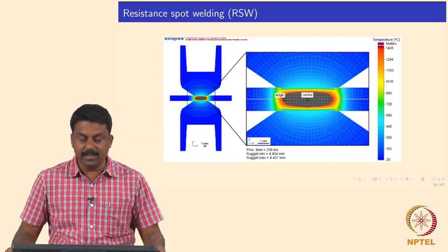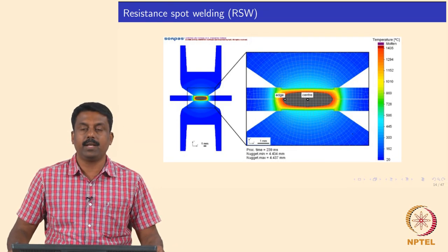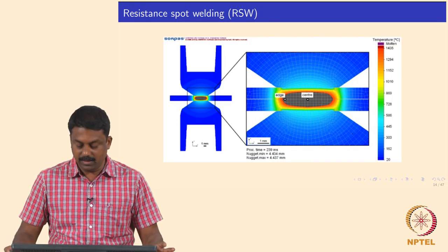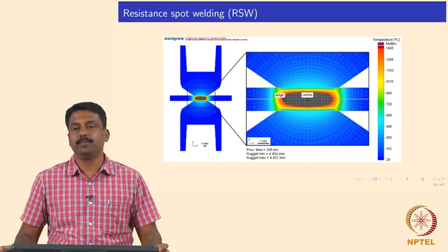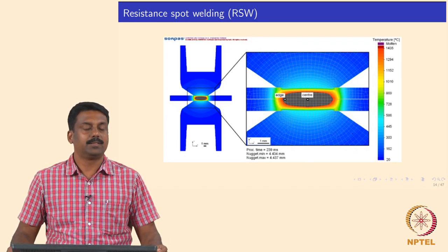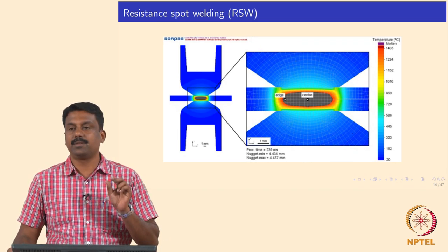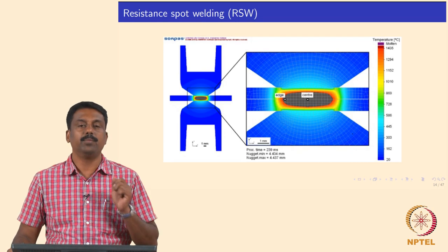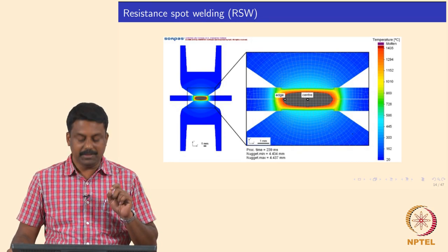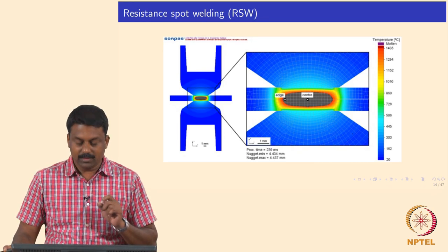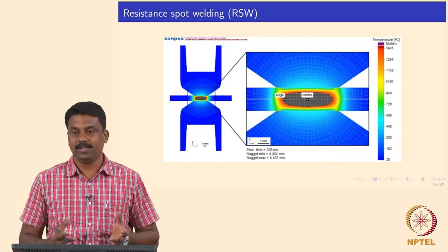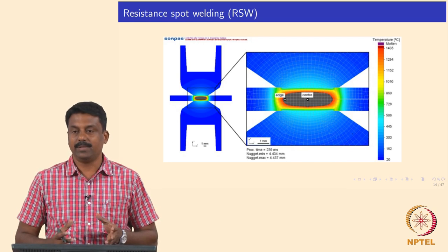If you look at the temperature distribution, the temperature gradient in resistance spot welding is extremely high. Therefore, the heat affected zone — the width of the heat affected zone — is very, very small, because of the effective heat transfer in the process.